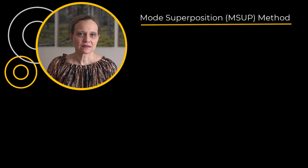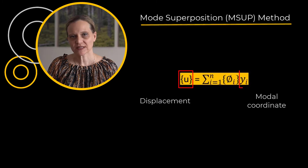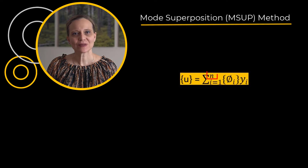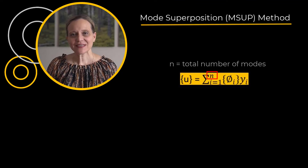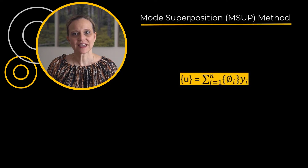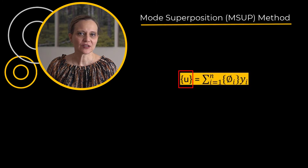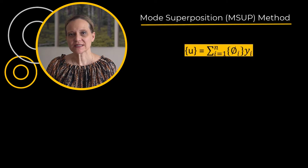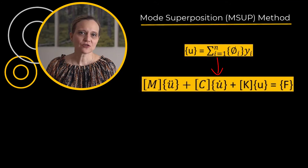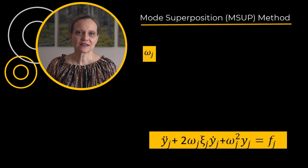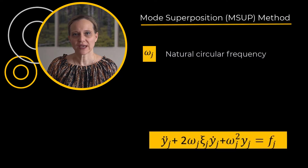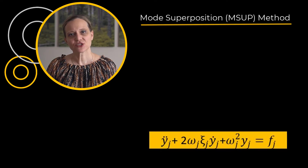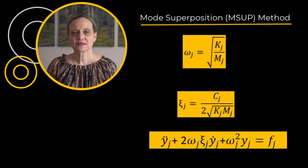In a modal-based analysis, the displacement u can be expressed in terms of modal coordinates yi. The term phi is the i-th mode shape and n is the total number of modes obtained from the modal analysis. This is where the mode-superposition method gets its name, since the final response u is a linear combination of the mode shapes. When displacement is expressed in modal coordinates and substituted in the equation of motion, we get the equation of motion in modal coordinates. Omega j represents the natural circular frequency of mode j and xi j represents the fraction of critical damping for mode j. Omega j and xi j can be represented in terms of mass, stiffness, and damping terms.